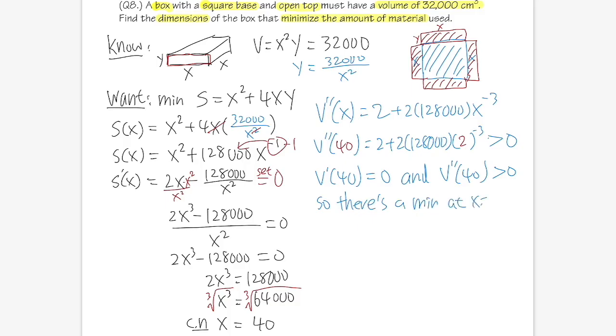Now we just have to find the dimensions. So we have the x already—keep in mind x is here and here—and now we just have to give the y. The y is 32,000 over x², and that will be 32,000 over 40², which gives us 20.